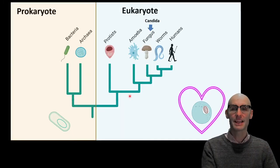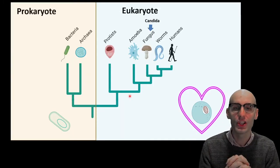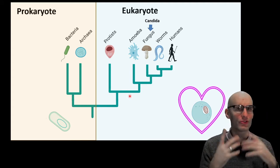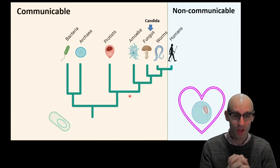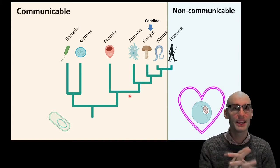Right, so let's jump into fungus. Where do they sit on the tree of life? Well, they're eukaryotes. So they have mitochondria and all the other good stuff. Where do they sit as diseases? Well, they're communicable. They can be spread and they're infectious.